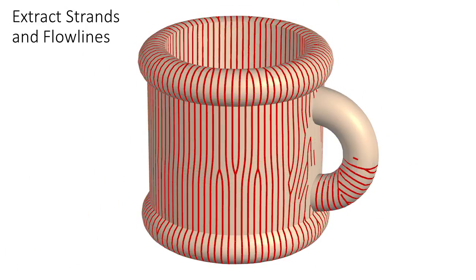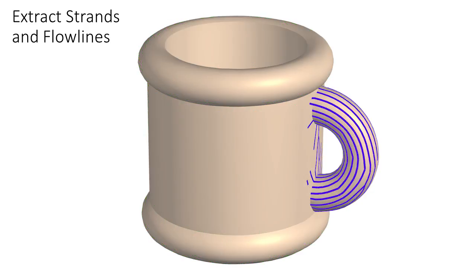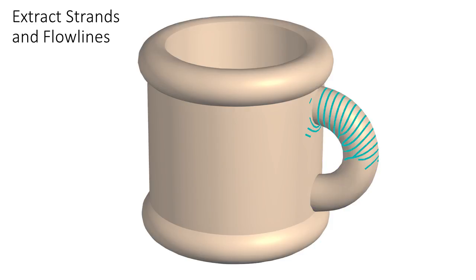To obtain reliable flow lines, we first extract flow line strands, or clusters of similarly directed curvature field streamlines. We then use those to extract individual flow lines.